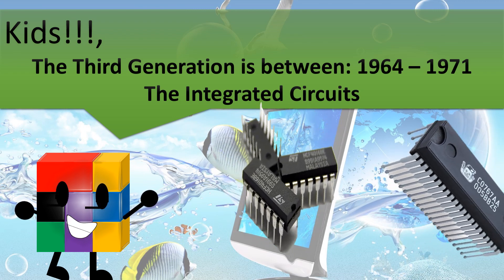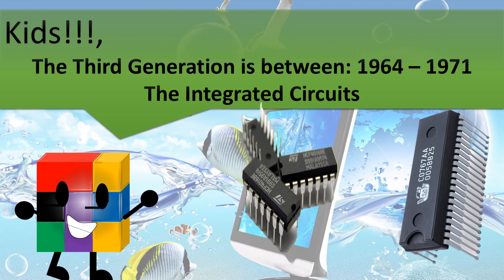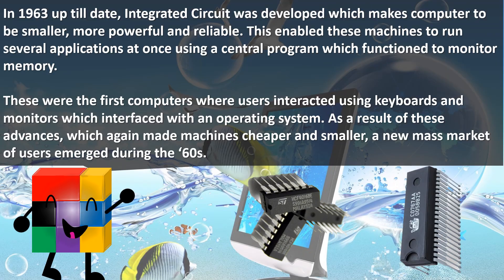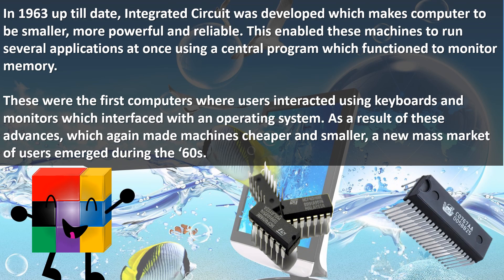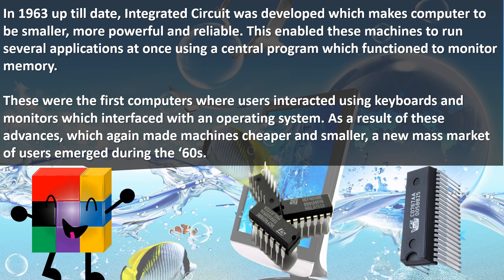The third generation is between 1964 to 1971: the integrated circuits. Integrated circuits were developed, making computers smaller, more powerful and reliable. This enabled these machines to run several applications at once, using a central program which functioned to monitor memory. These were the first computers where users interacted using keyboards and monitors, which interfaced with an operating system. This made machines cheaper and smaller, and a new mass market of users emerged during the 60s.